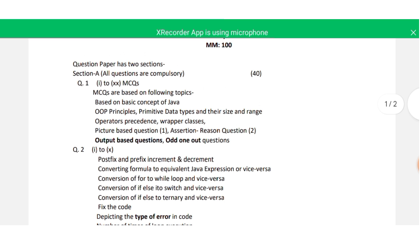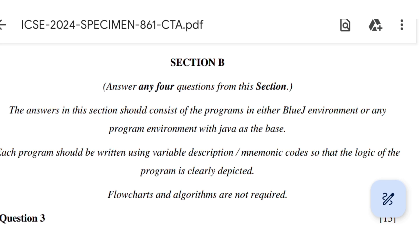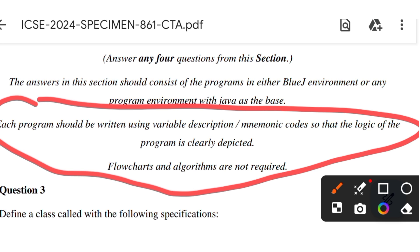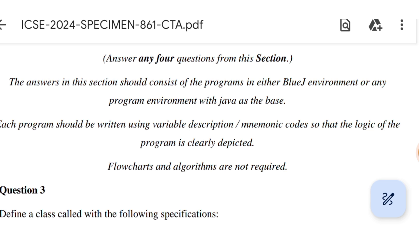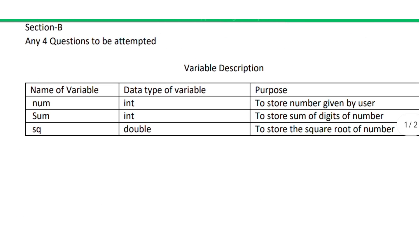Now we discuss Section B, where we have to answer any four questions out of six. Each question carries 15 marks. Each program should be written along with a variable description. Flow charts and algorithms are not required. The variable description table has three columns: the name of the variable, the data type of the variable, and the purpose of the variable — why the variable is used in the program.